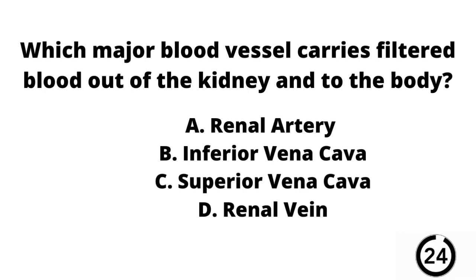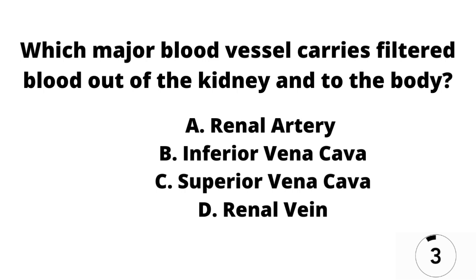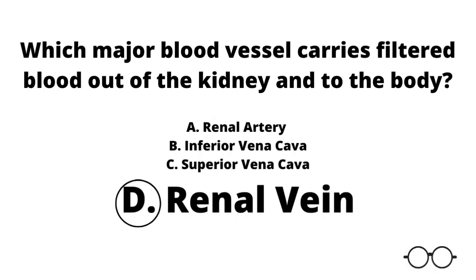Question number four. Which major blood vessel carries filtered blood out of the kidney and to the body? A the renal artery, B the inferior vena cava, C the superior vena cava, or D the renal vein? Our answer here is D — the renal vein is the one that takes filtered blood out of the kidney and sends it to the body.